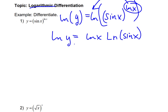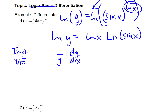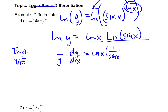Now we take the implicit differentiation of both sides. On the left side, the derivative of natural log of y is 1 over y times dy/dx — there's chain rule happening with the implicit differentiation. On the right side, we see a product: natural log of x is the first factor and natural log of sine of x is the second. Applying the product rule: first times derivative of the second. The second is a composite function with outer function natural log and inner function sine x, so that's 1 over sine of x times the derivative of sine x.